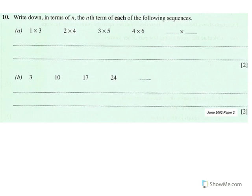Press pause on the video and then I'll give you the answers once you've got it done. Looking at the numbers on the left of the multiplying sign: one is the first term, two is the second term, three is the third term, and four is the fourth term.